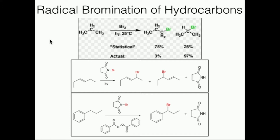The only thing you can really do to alkanes is radically halogenate them. Here's an example of a radical halogenation. This is actually propane — a three-carbon alkane. What we're going to do is react it at room temperature using Br2, which is just diatomic bromine, and light, h-nu.